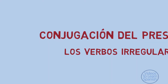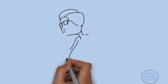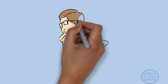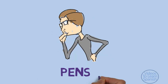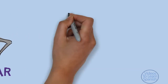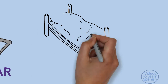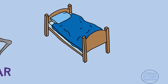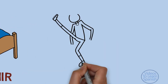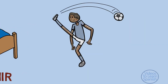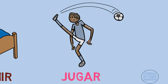In this video, we will watch the vowel variation in the stem of some irregular verbs. The endings, however, will always be the same that we studied for the regular verbs. We will take pensar, dormir, and jugar as models for this first type of irregularity.